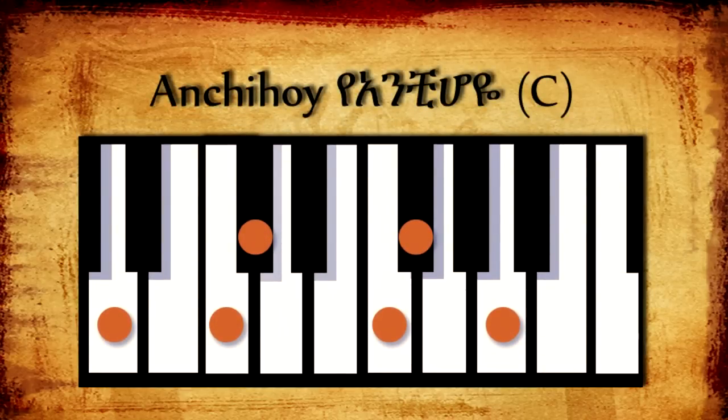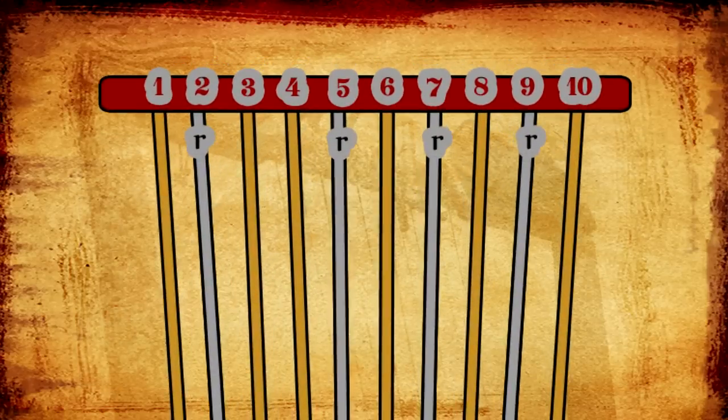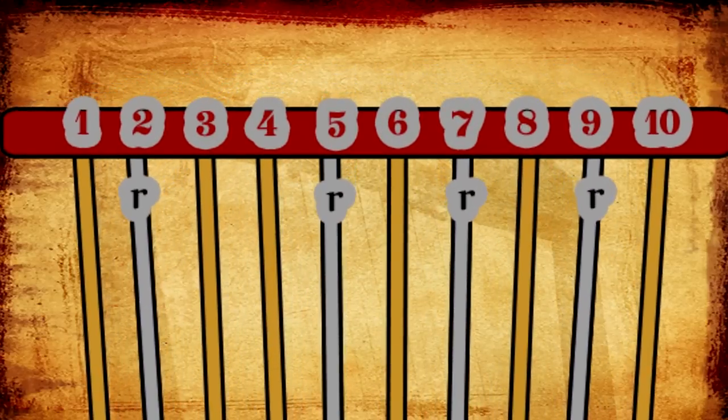This is the Ancho Yekanyat in the key of C. Remember that strings 2, 5, 7, and 9 are resting strings.